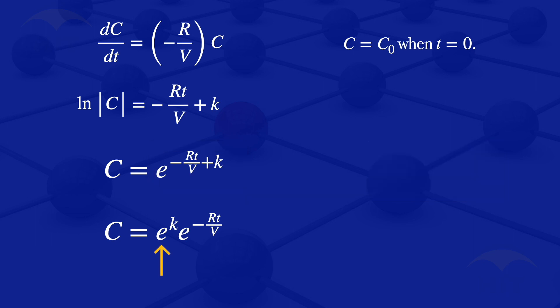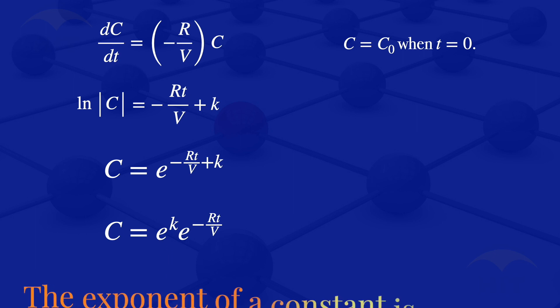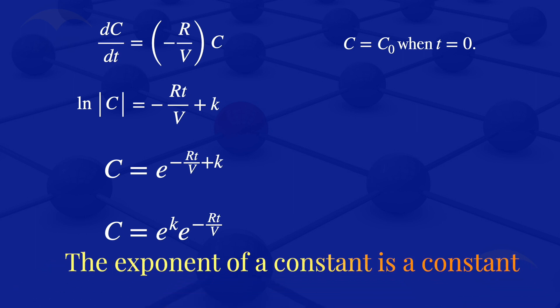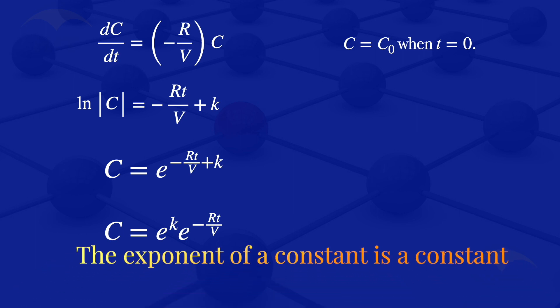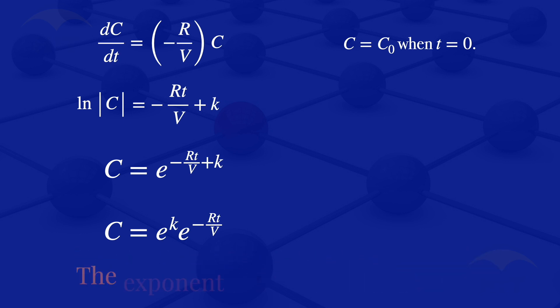This exponent of K can be simplified. Since K is a constant, the exponent of a constant gives us another constant, which we call K1. Our equation becomes C is equal to K1 multiplied by the exponent of minus RT divided by V.